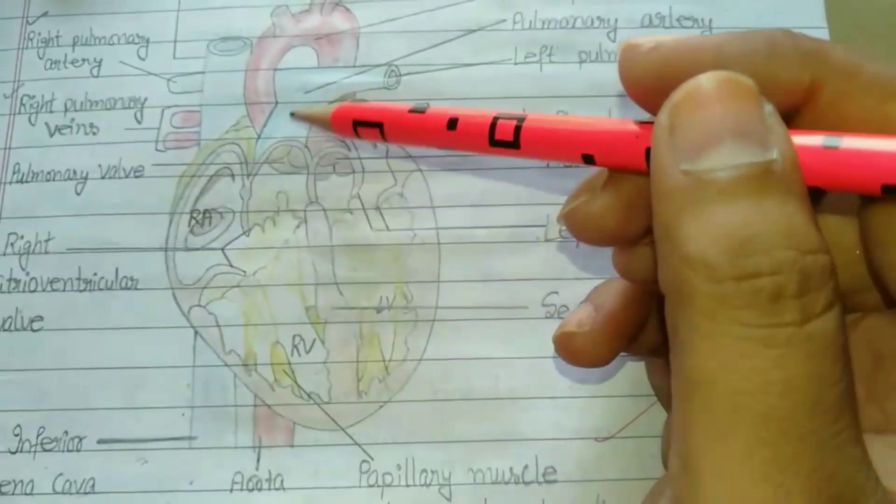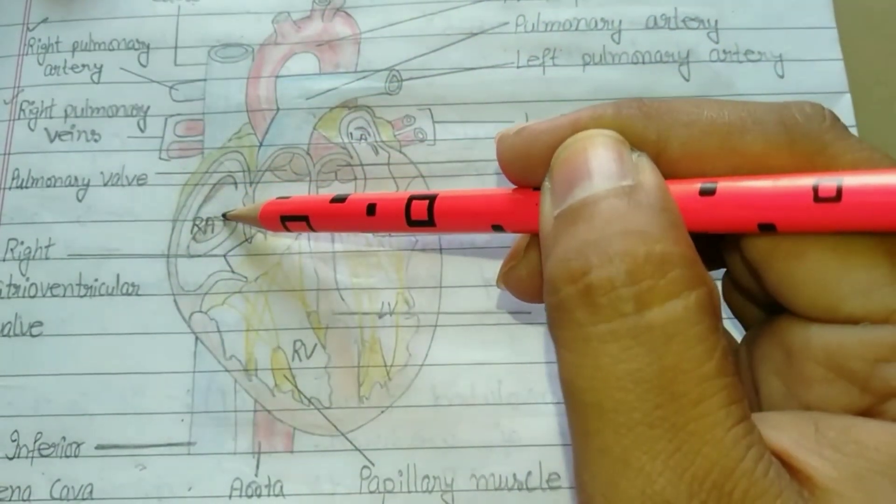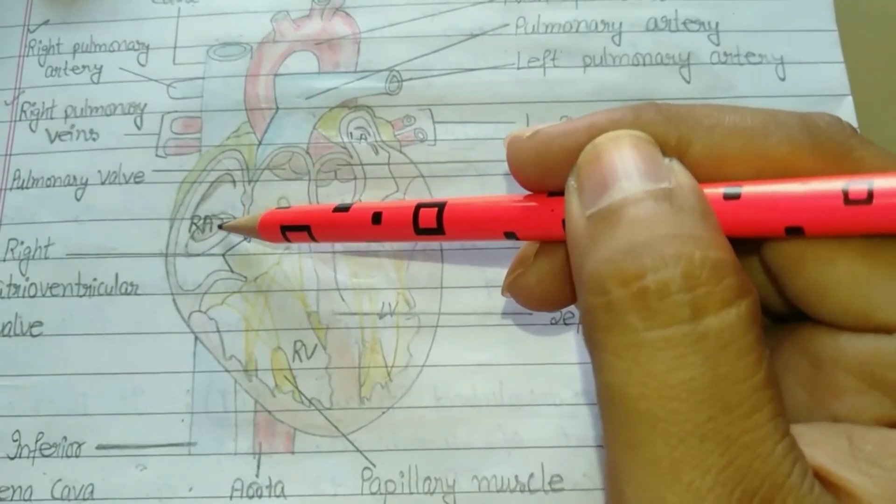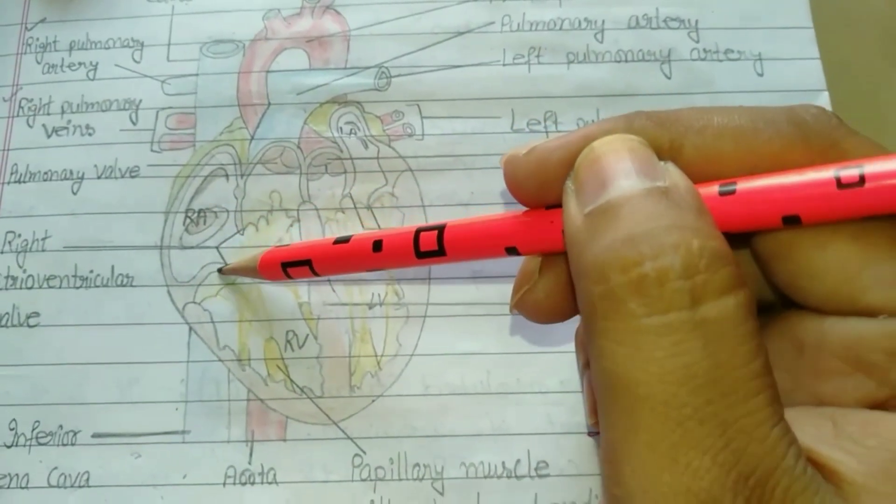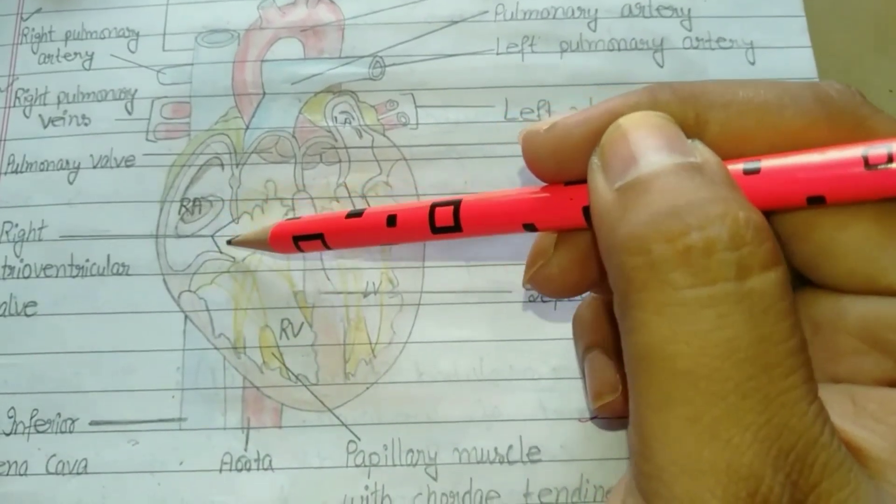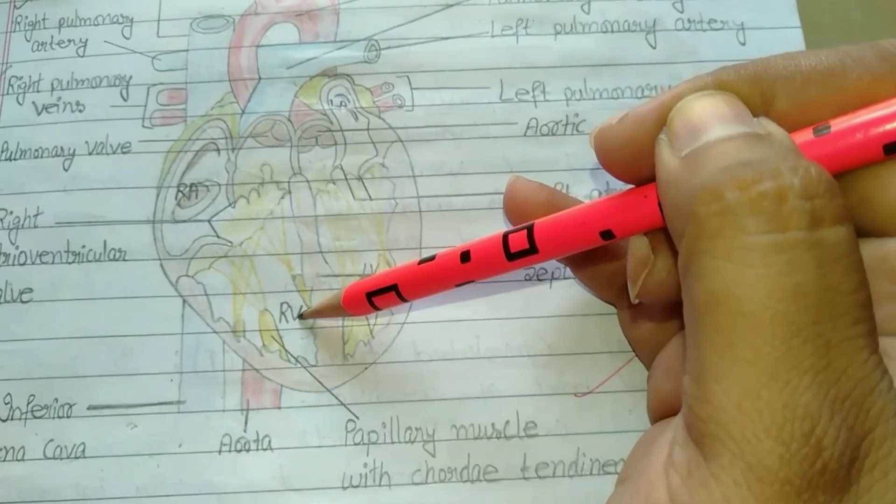Deoxygenated blood from these vena cavas came into the right atrium. Here the blood flows with pressure and these valves, known as right atrioventricular valves, get opened and the deoxygenated blood flows into the right ventricle.